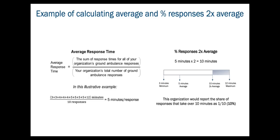Sarah explains how to calculate these responses. This hypothetical organization has 10 total responses during the data collection period. To get average response time, add all response times and divide by the number of responses — in this case 10 — for an average of 5 minutes. To determine the share taking more than twice the average, multiply 5 by 2 to get 10 minutes. Only one response, the one taking 12 minutes, exceeds twice the average, so the organization reports 1 out of 10, or 10% of responses, take more than twice the average.